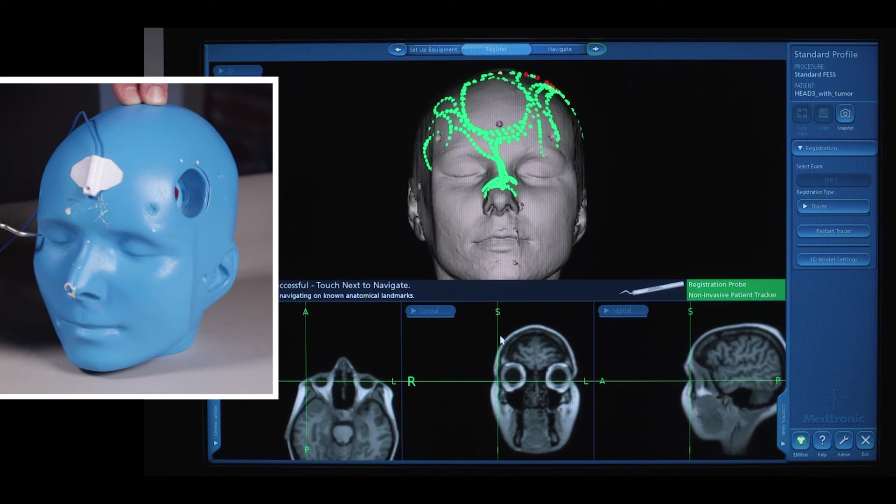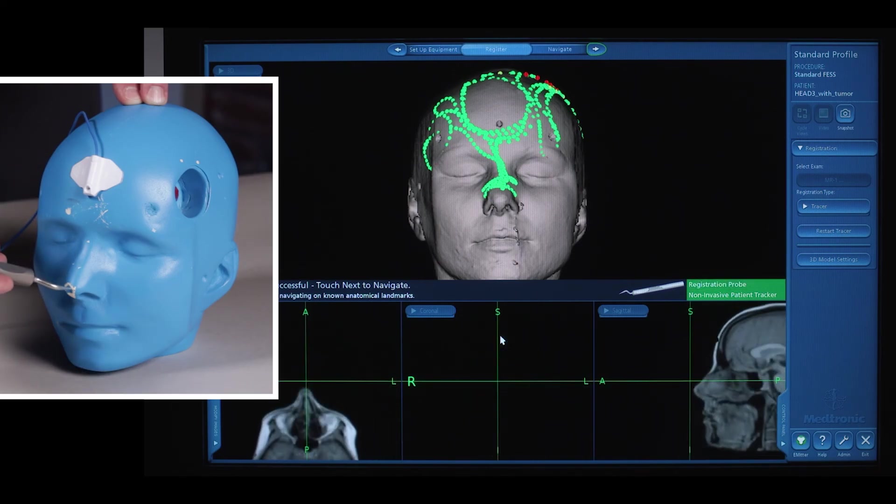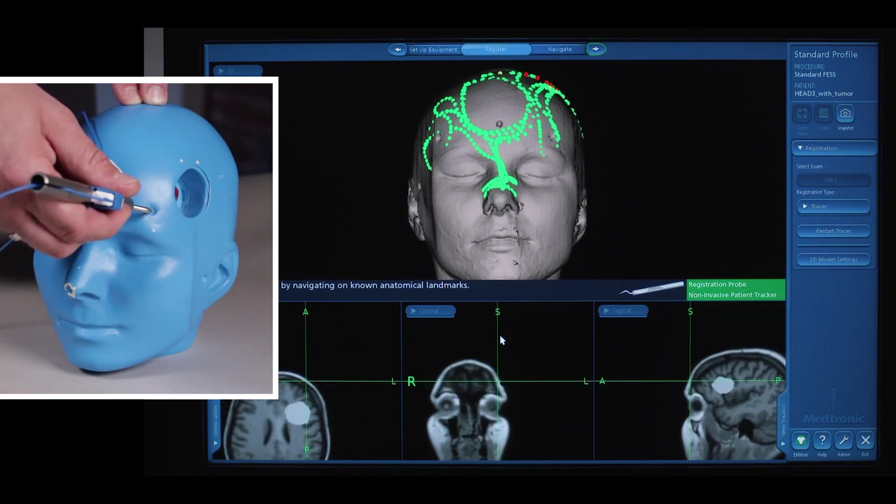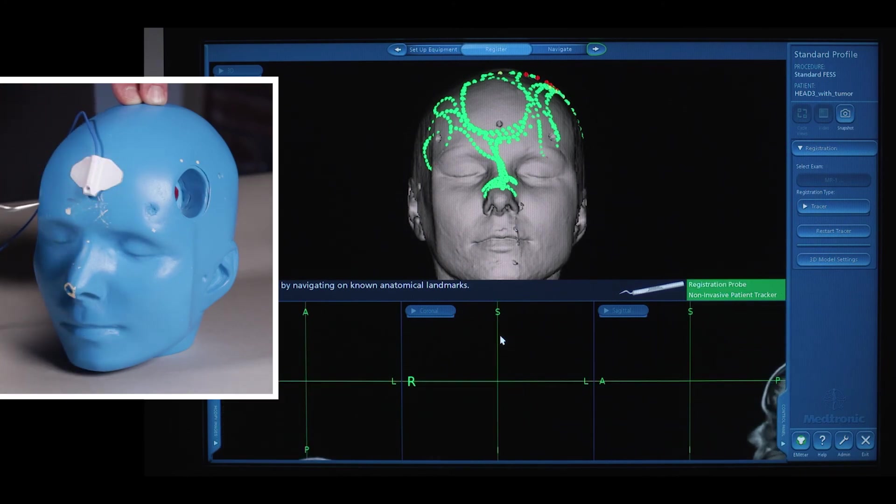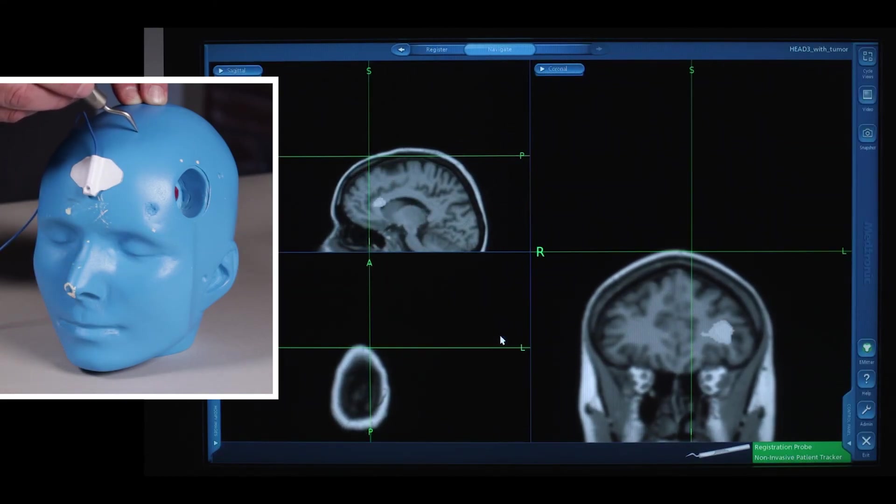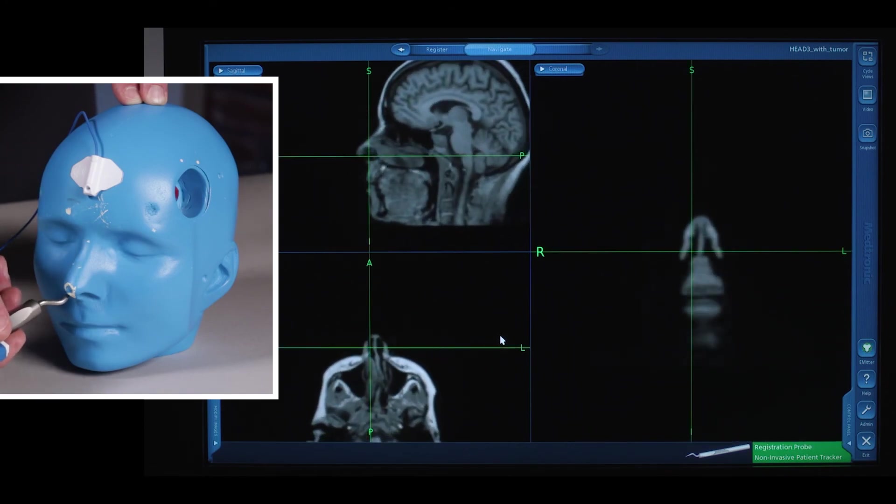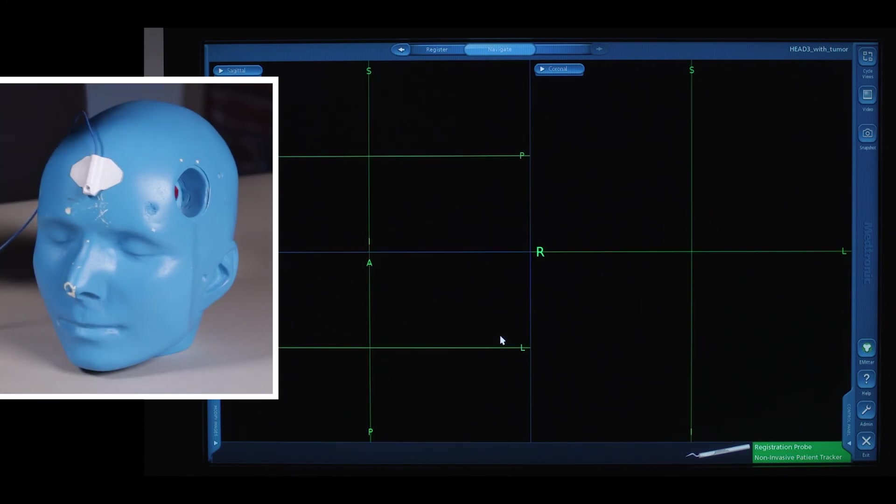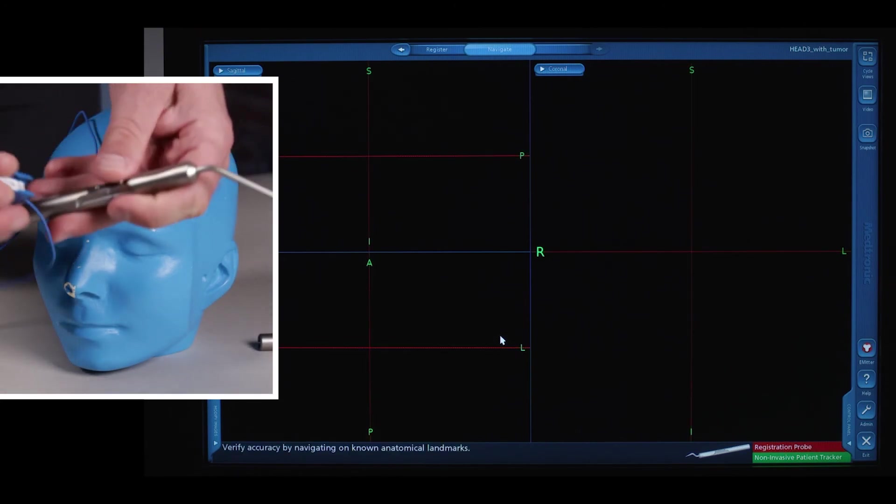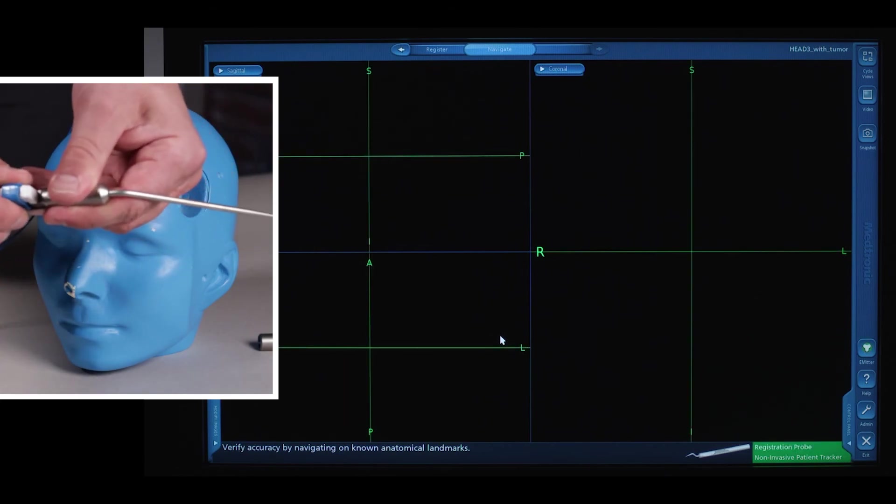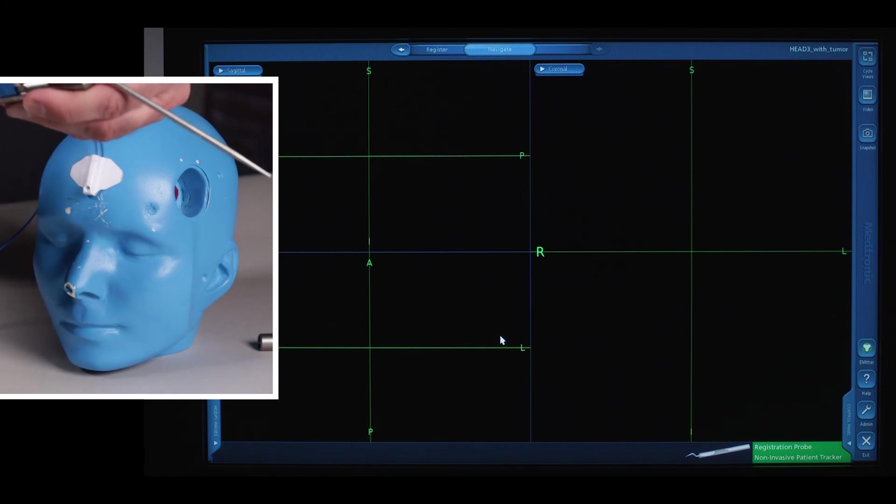Verify landmarks such as lateral canthus, medial canthus, tip of the nose, or any other pertinent anatomy that you find necessary. If this is satisfactory, hit the next button and we'll begin our navigation. Utilization of other tool tips can be facilitated by changing the tracker to another instrument. Multiple trackers can be employed up to eight with the S7 for using the ENT.